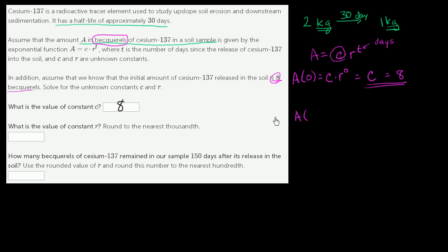So A of 30, remember our T is in days. A of 30, after 30 days, if I want to use the formula, if I want to use the description of this exponential function, we already know that C is 8. It's going to be 8 times R to the 30th power, which is going to be equal to what? Well, if we started with 8, 30 days later, we're going to have half as much. We're going to have four becquerels.